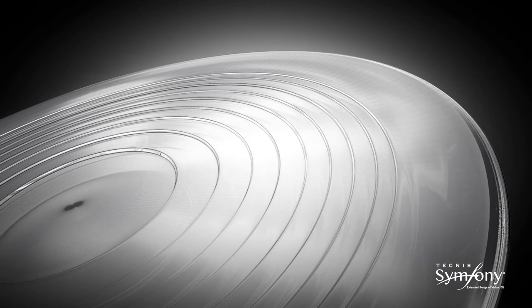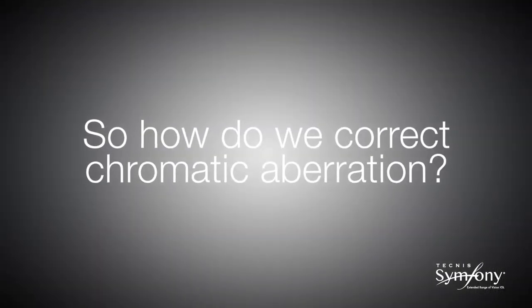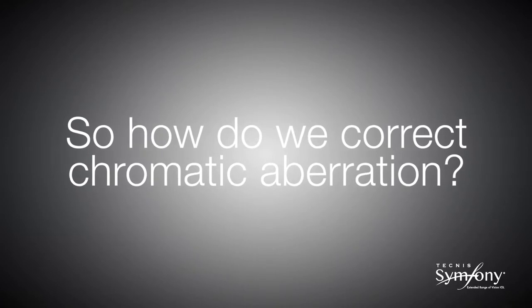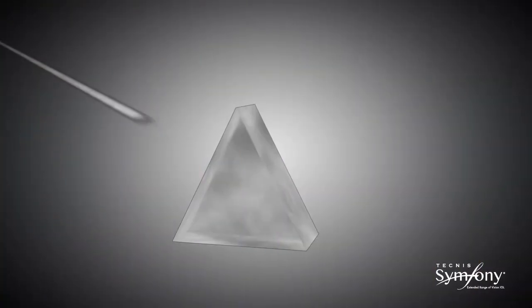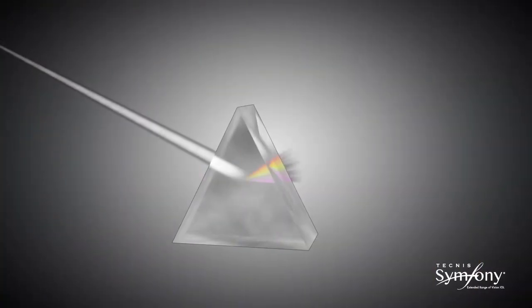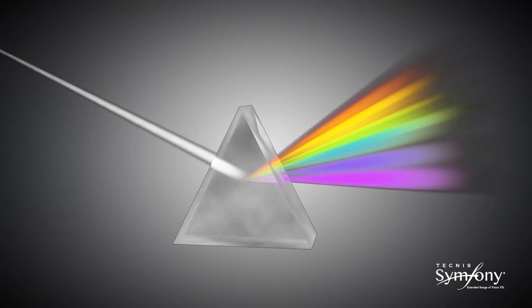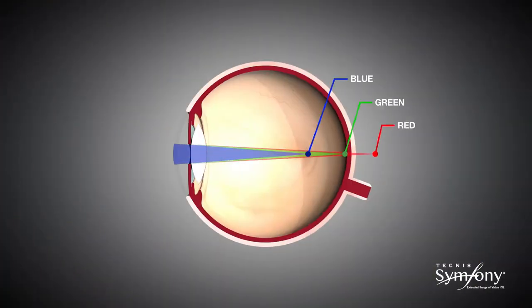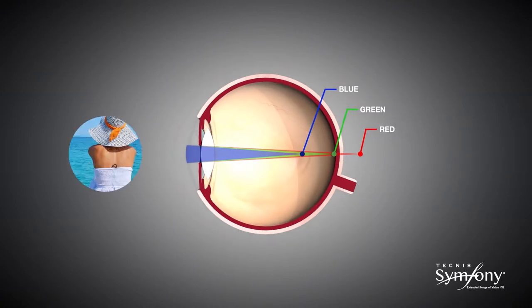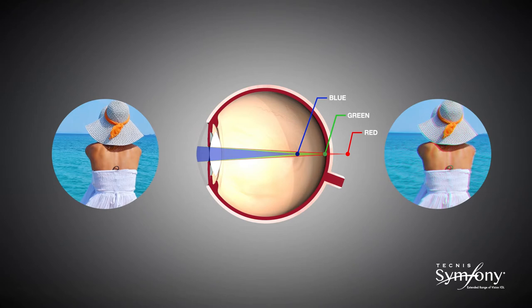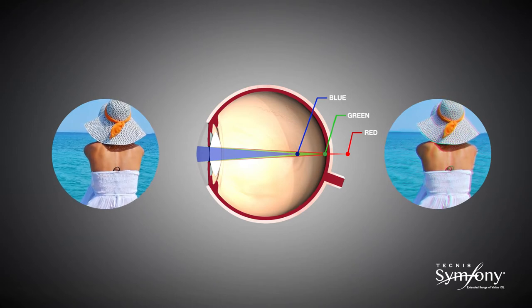Now let us look at how the achromatic technology works to correct chromatic aberration. Visible light is composed of a range of wavelengths that are red at one extreme and blue at the other. The cornea of the natural eye is a refractive lens which is more powerful for blue light than red. The eye can only be in focus for one wavelength at a time. As such, the remaining wavelengths of visible light, which are out of focus, cause blur and a reduction in contrast vision. This is called chromatic aberration.